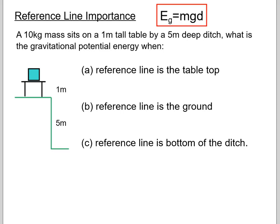So now reference line has a bit of an importance when it comes to calculating gravitational potential energy. So if we have a 10 kilogram mass and it sits on top of a one meter tall table right beside a five meter deep ditch, what is the gravitational potential energy when the reference line is the table top? So if we were to put a reference line right there, well that would mean that the d or the h, the d in this case would be zero. So our potential energy, if we put the reference line at the table top, this object would have zero joules of potential energy.